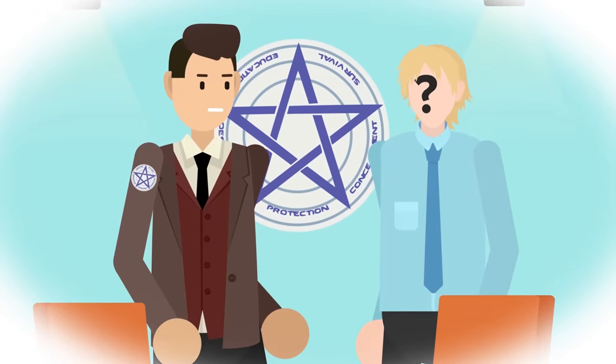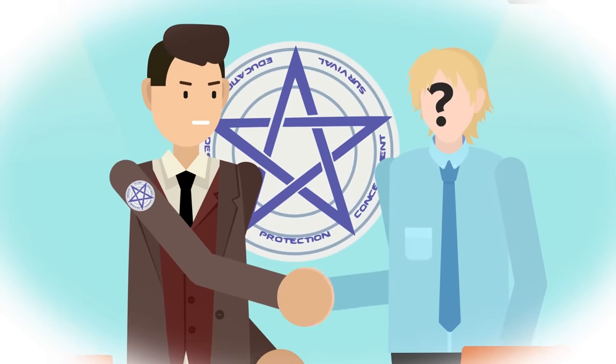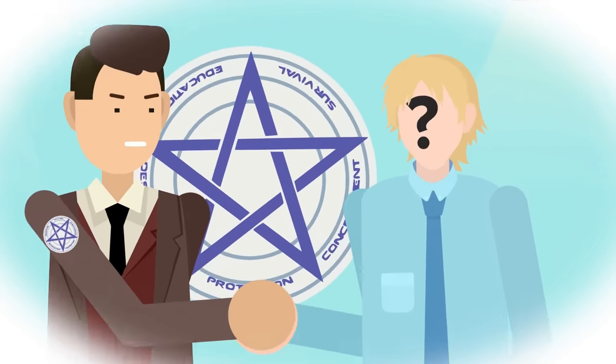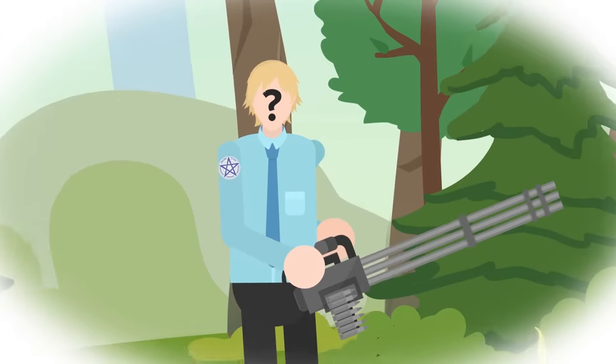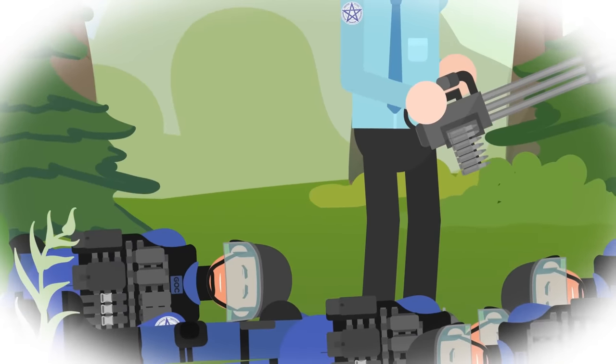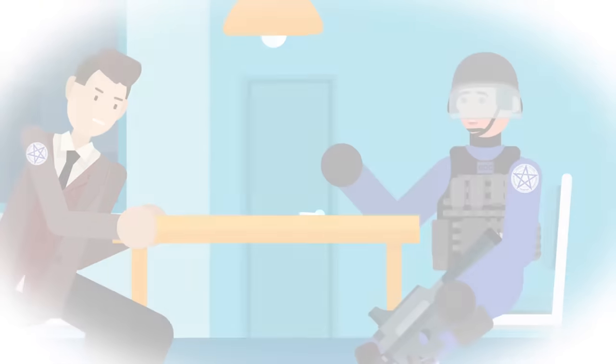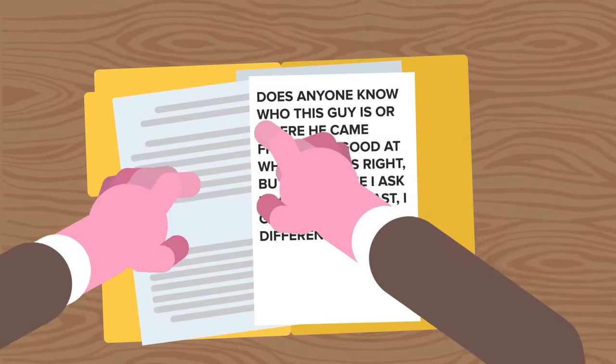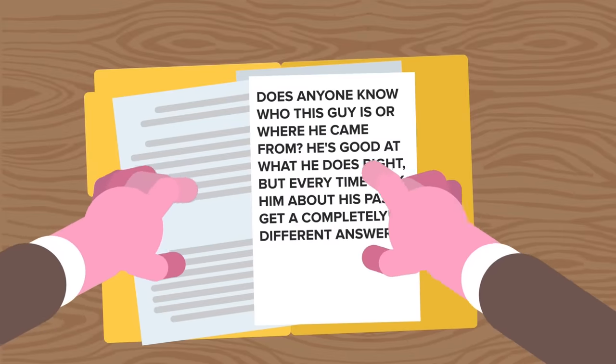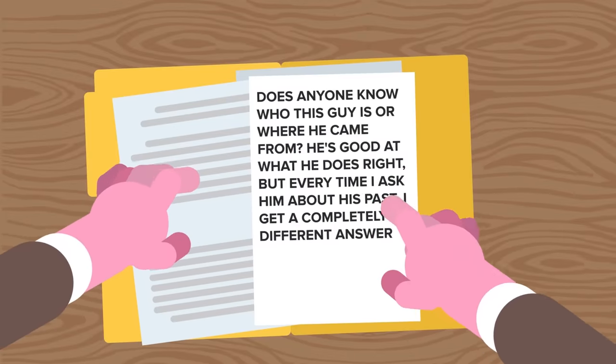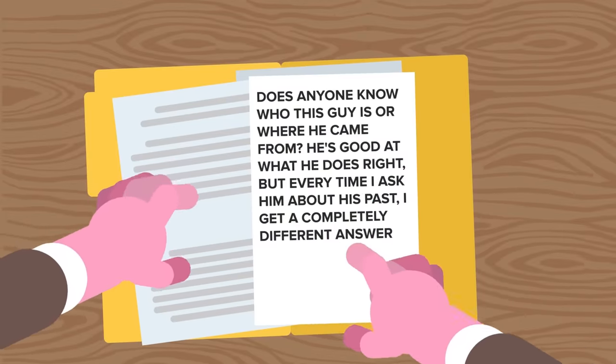First recruited into the Coalition in 1981, Ukulele was reported to have killed a number of known threat entities, or KTEs, but these usually came with the result of heavy casualties, including the deaths of other GOC operatives. One Colonel Richard Adams is quoted in Ukulele's service record as saying: 'Does anyone know who this guy is or where he came from? He's good at what he does, right, but every time I ask him about his past, I get a completely different answer.'